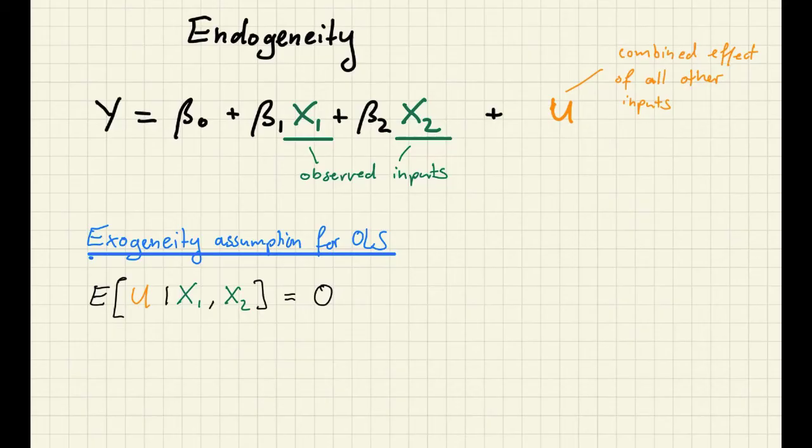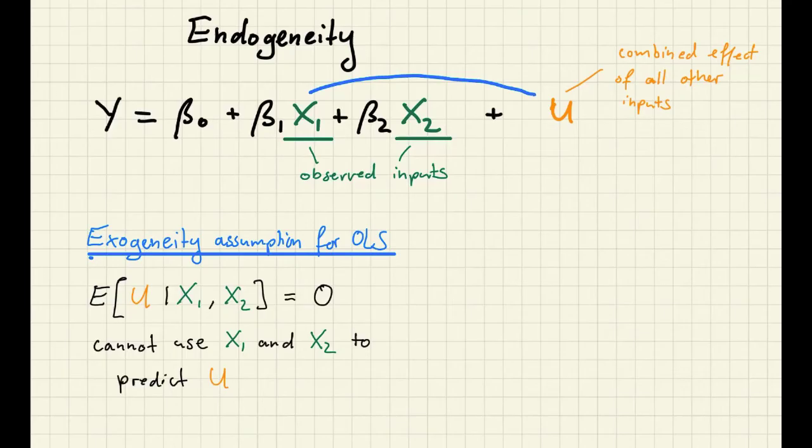Intuitively this means that we cannot use the regressors to predict the level of U. That is, from observing X1 we cannot figure out whether U is large or small. In the same way we cannot use information in X2 or information that we obtain by combining what we observe for X1 and X2. So none of that information is informative about U.